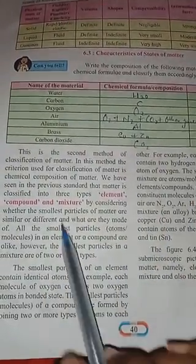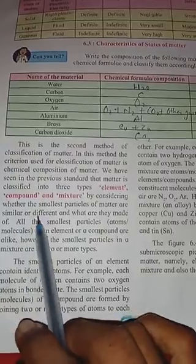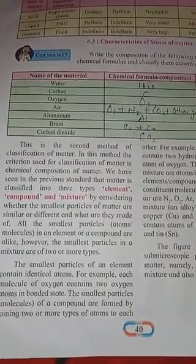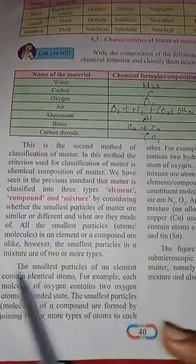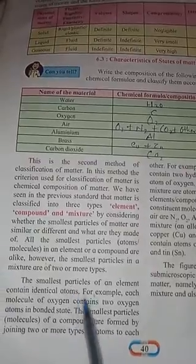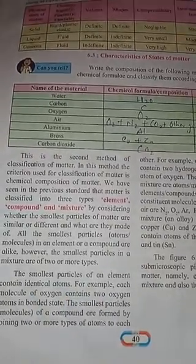In the second method of classification, matter is divided into three types: element, compound, and mixture, by considering whether the smallest particles of matter are similar or different. The smallest particle is known as an atom, and when atoms come together that is a molecule. The smallest particle of an element contains identical atoms.